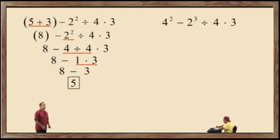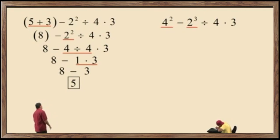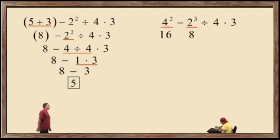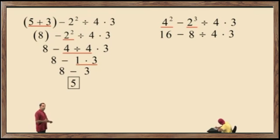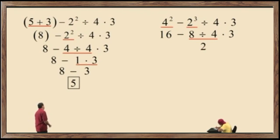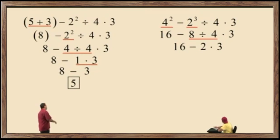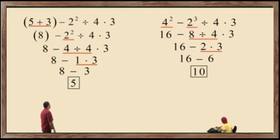Let's go to this one. Notice we do not have any parentheses, so our next category is exponents. 4 squared is 4 times 4, which is 16. 2 cubed is 2 times 2 times 2, which is 8. Bring down our work. Now we have subtraction, division, division, and multiplication. Multiplication and division are in the third category — work left to right, whichever comes first. Division came first: 8 divided by 4 is 2. Bring down the work. We have subtraction and multiplication — perform multiplication first: 2 times 3 is 6. Bring down your work. 16 subtract 6 is 10.